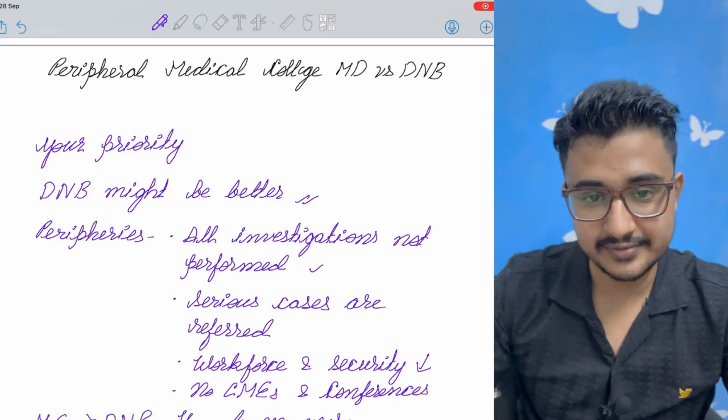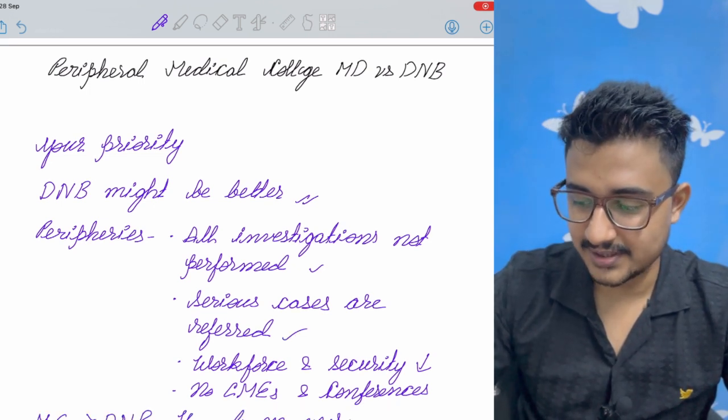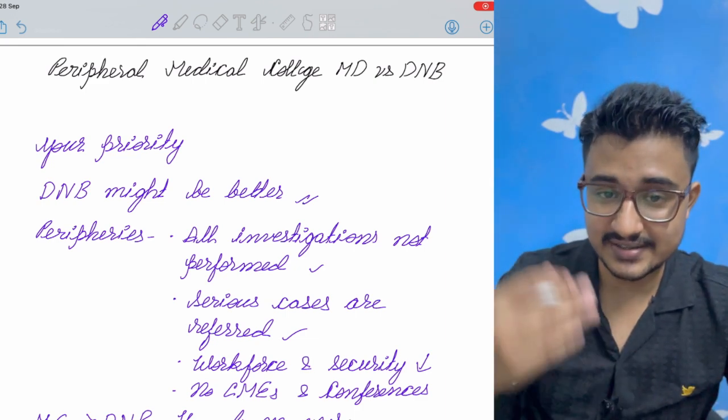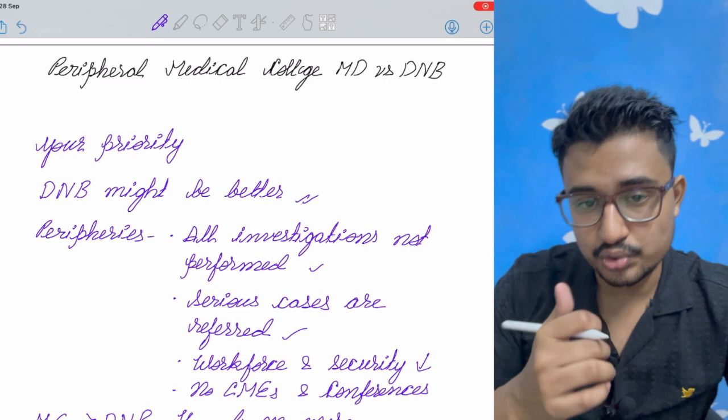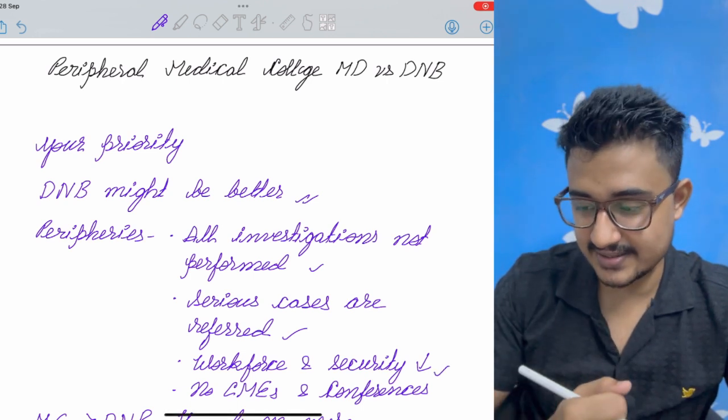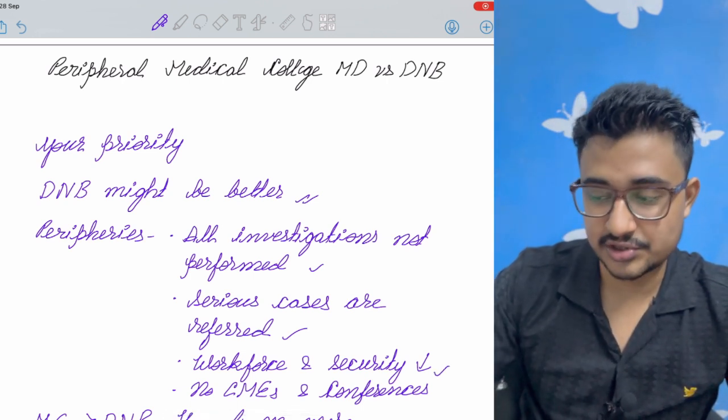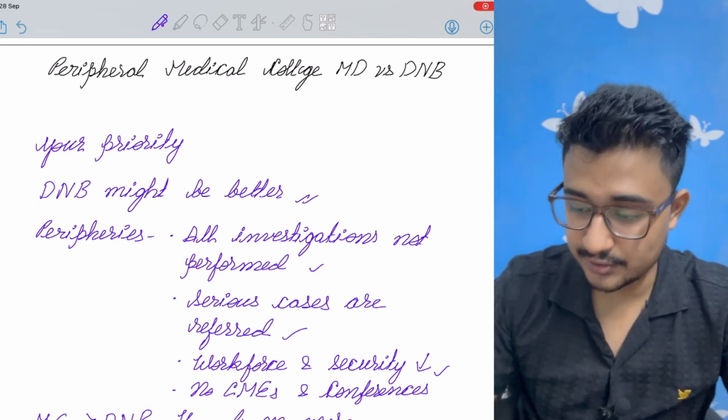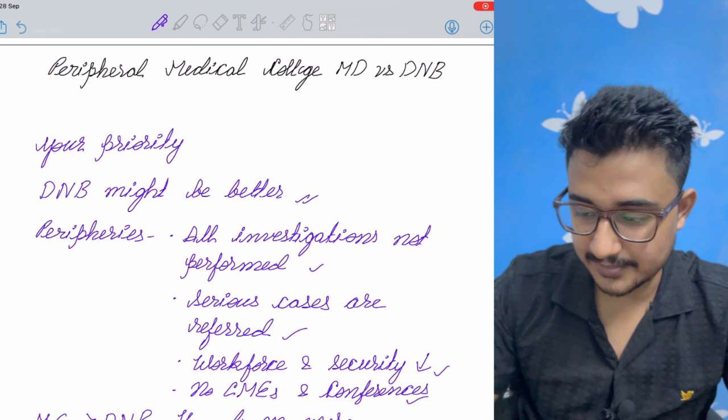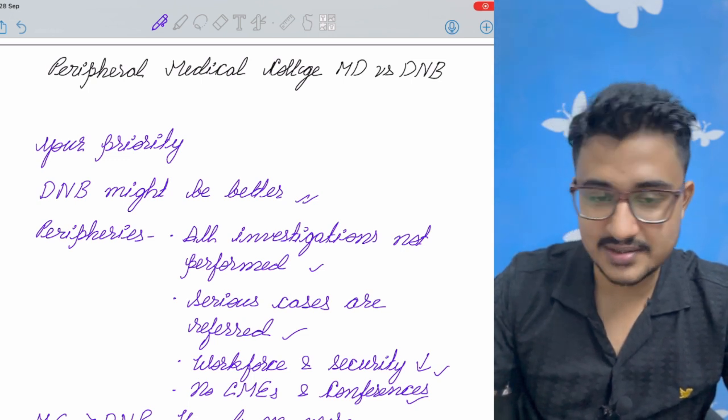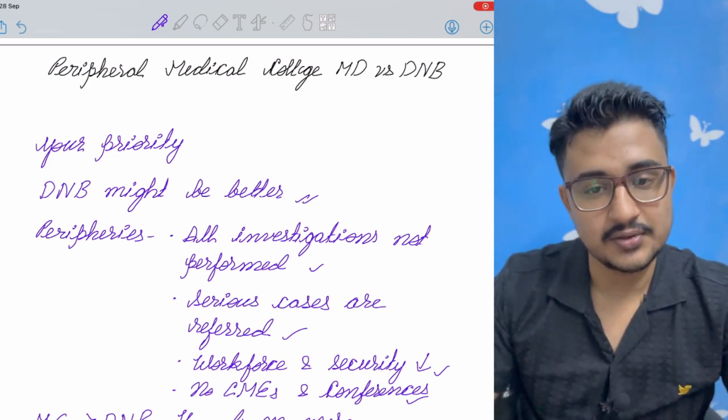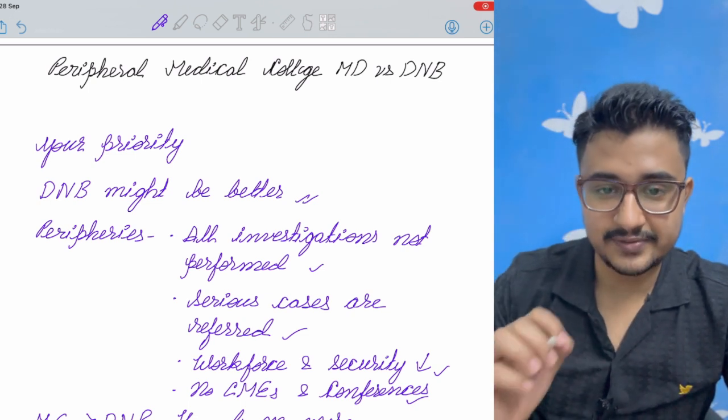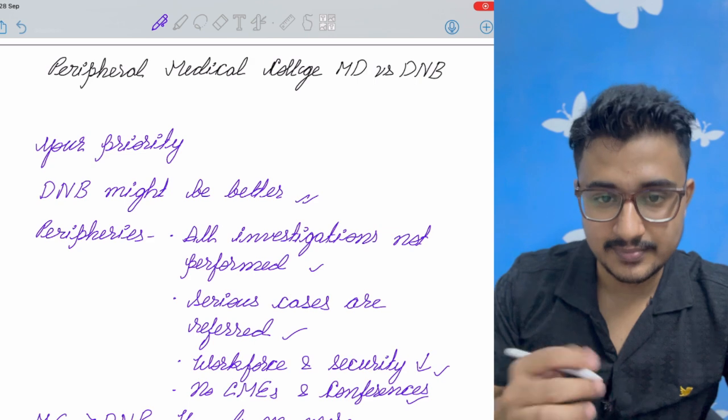Like ANA, HEP2, all immunological profiles are not performed. In serious cases, then they are referred to the higher centers or the central medical colleges. So you don't get to see the severe cases. Workplace security is very much less in case of peripheral medical colleges compared to the central medical colleges. And DNB is very low. And no CME or conferences are not there which are necessary for your learning.